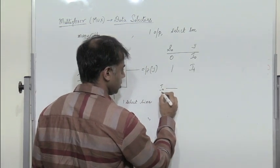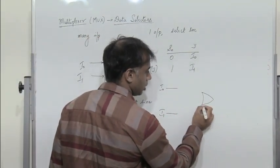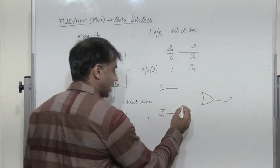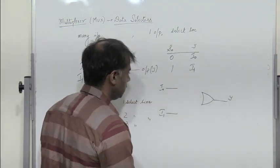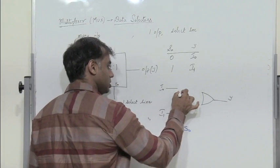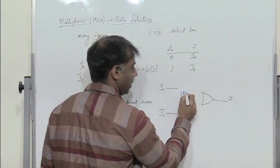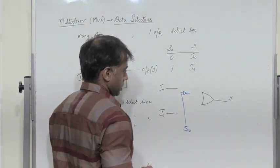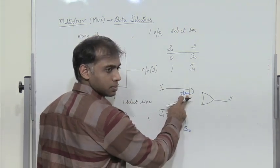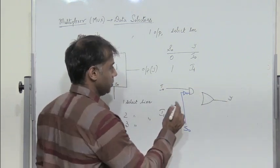Now how can this be implemented? We have 2 inputs, i0 and i1, and we need to select one of them. So we have an OR gate and one output y. We have one select line s0, which is used to select either i0 or i1. When s0 is 0, I need to select i0. So I pass s0 through an inverter. When s0 is 0, I get a 1 at the output of the inverter. When I have a 1 there, whatever is at i0 will appear at the output of the AND gate.